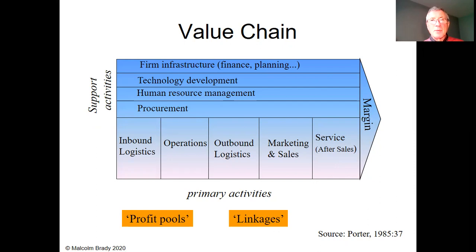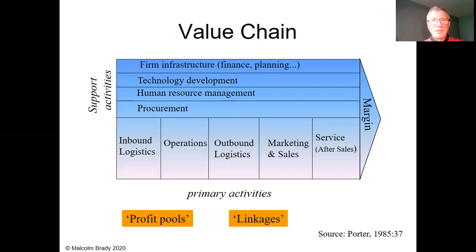Similarly, human resource management applies across the board — people are needed in input activity, operations, output, marketing, and service. All of these require people to be recruited, trained, and deployed. Technology is the same — across all elements. And the firm infrastructure is more to do with finance, planning, and so on — not necessarily for each individual primary activity, but to ensure the firm as a whole does its job.